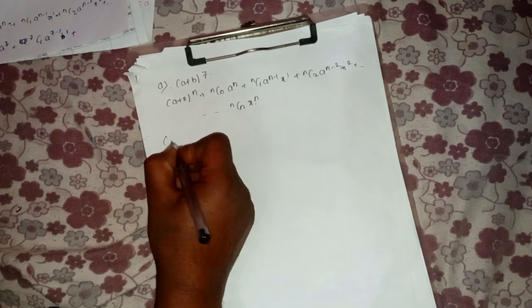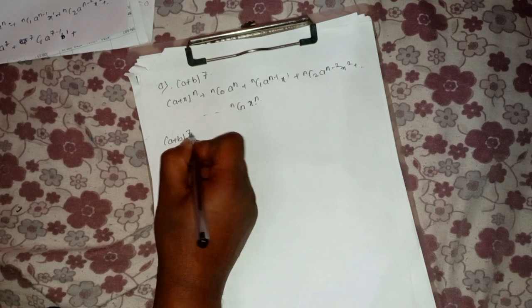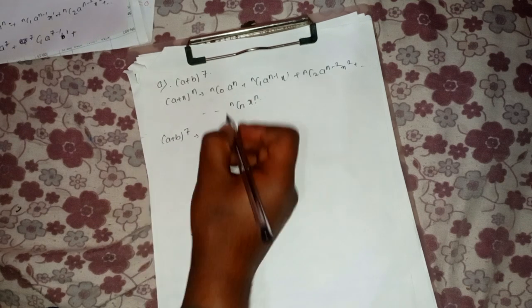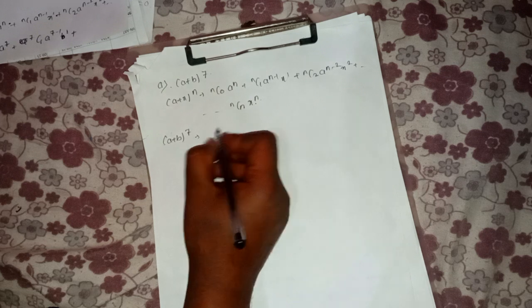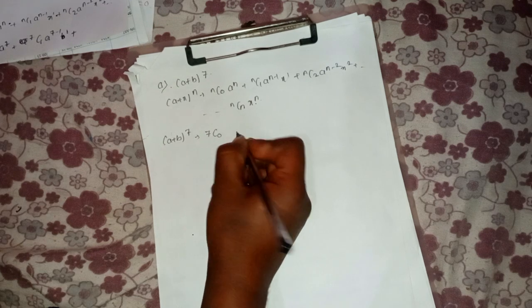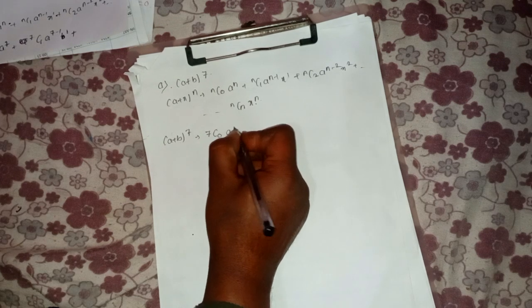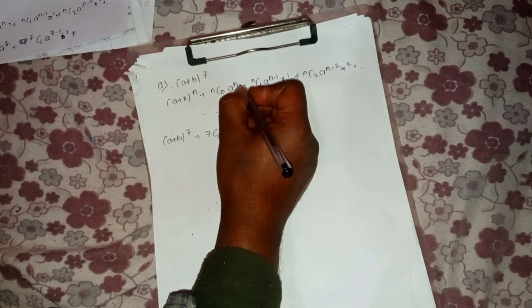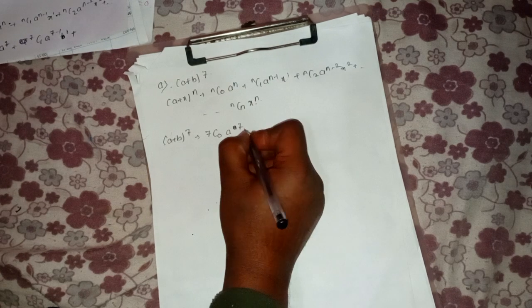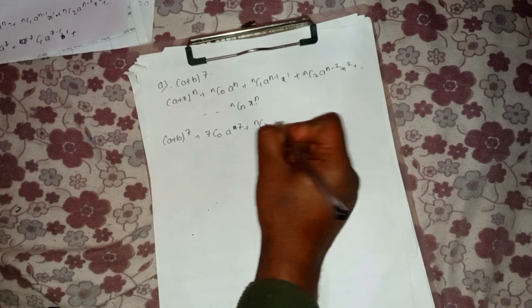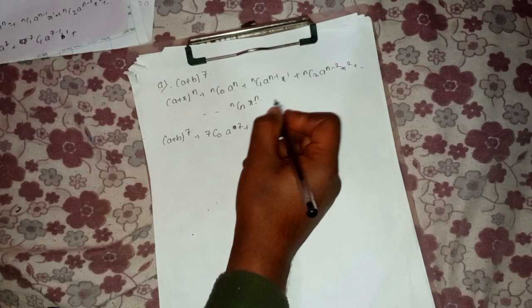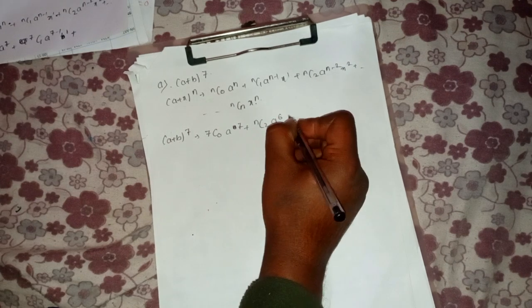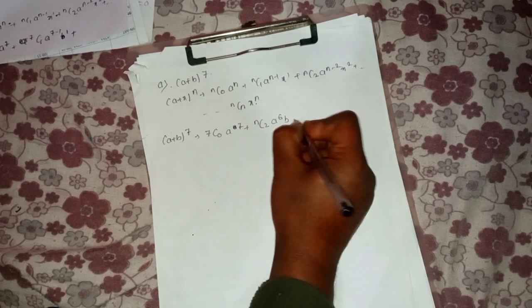So for (a + b)^7, with n = 7: nC0·a^7·b^0 + nC1·a^6·b^1 + nC2·a^(n-2)·b^2 and so on. Here n minus 1 becomes 6, and b to the power 1.